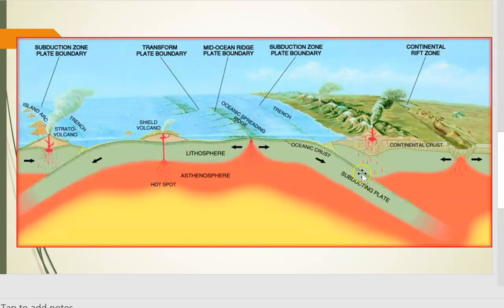Over here, you can see that we have the continental crust and a chunk of oceanic crust. Because they are pushing together and that oceanic crust is denser, it is going to subduct or slide underneath that continental crust. And when it does, it forms this trench on Earth's surface.